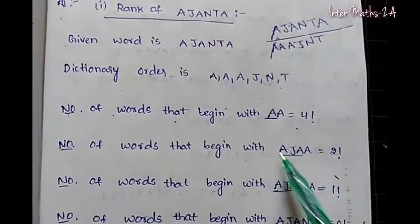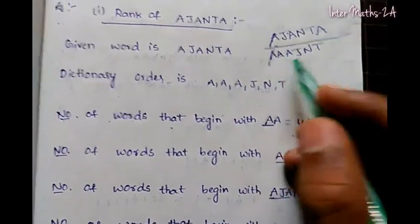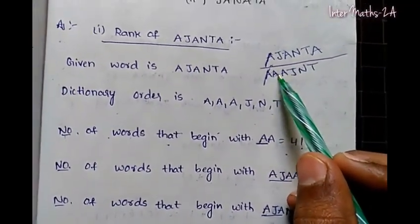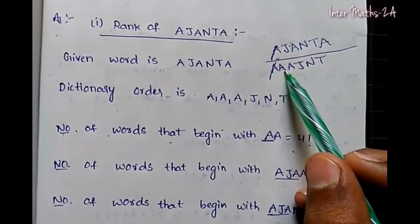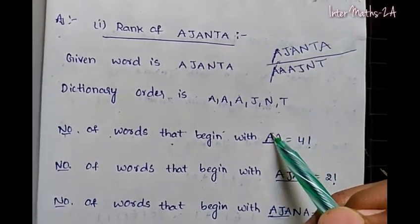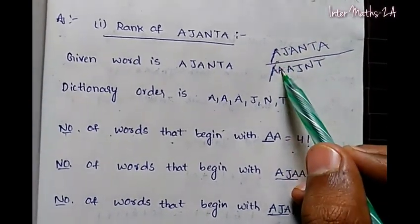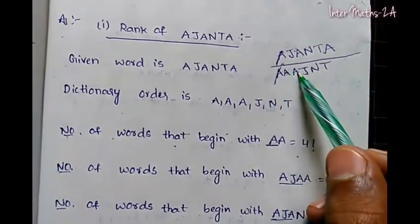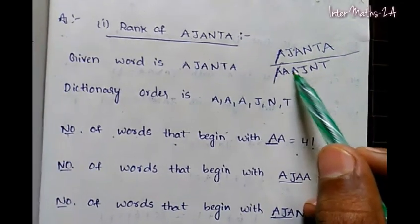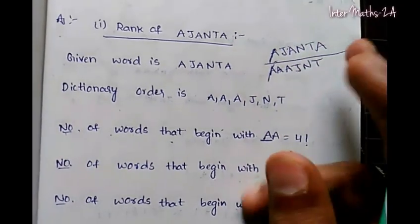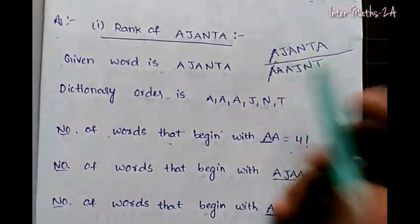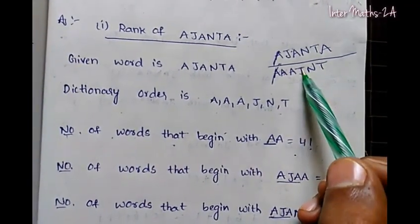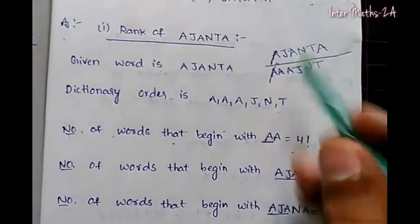The number of words that begin with a given prefix is computed by fixing those letters and permuting the rest. The next letter is A, so A has 4 factorial arrangements. The next letter is also A, so we apply the same pattern. Since we have double letters, we divide accordingly.